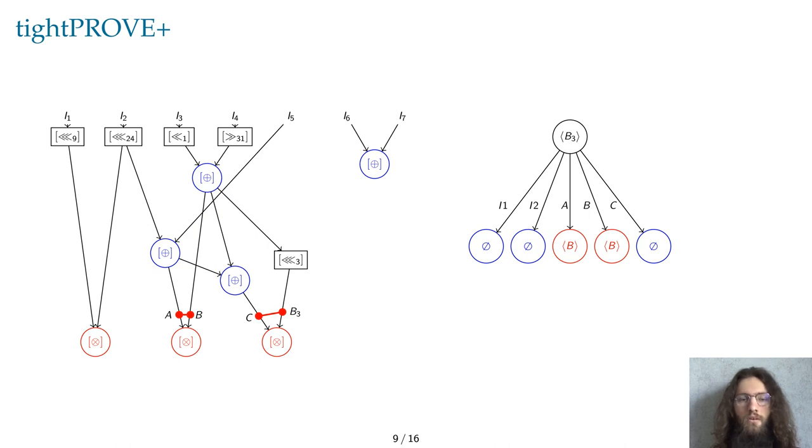If no attack is found in all the graphs, then the circuit is tight-probing secure for any value, and otherwise, it is possible to describe an attack explicitly thanks to the information contained within the graphs.